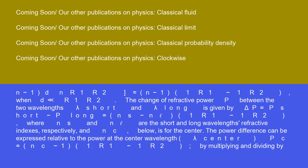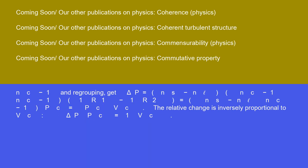The power difference can be expressed relative to the power at the center wavelength lambda CENTER: PC equals (NC minus 1)(1/R1 minus 1/R2), by multiplying and dividing. The relative change is inversely proportional to VC: delta P over PC equals 1 over VC.